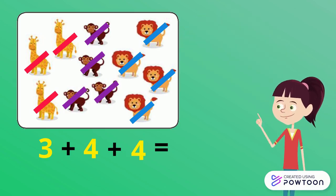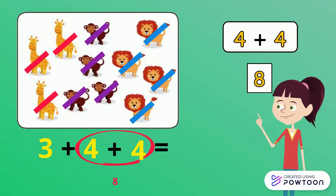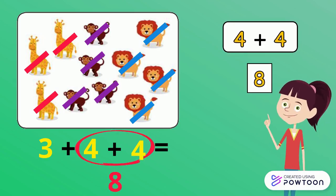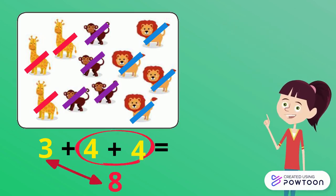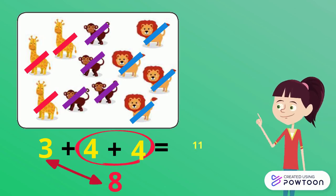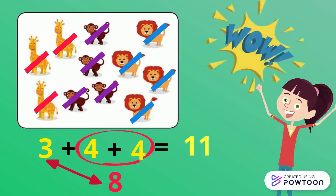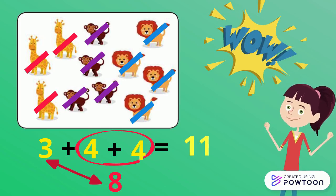We will start by adding 4 plus 4. The double of 4 is 8. Then we add 8 with 3. The result is 11. So, 3 plus 4 plus 4 equals 11.